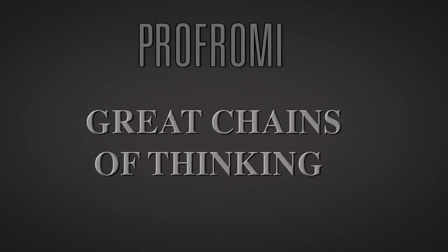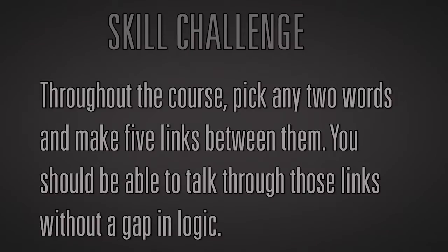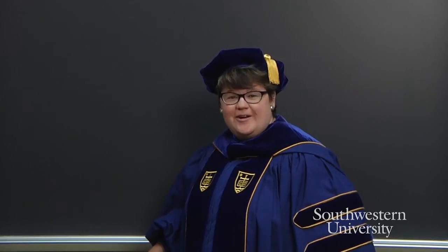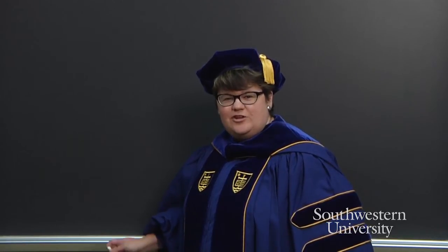In this skill, we'll use this to create great chains of thinking. Throughout this course, I would like you to be able to pick any two words and make five links between them. You should be able to talk through those links without a gap in logic. To create a great chain of thinking, you need seven circles.